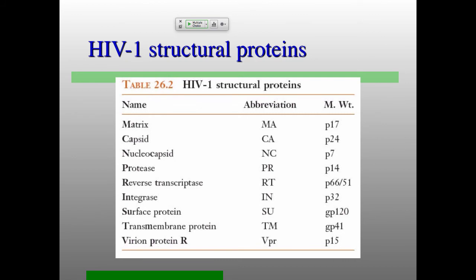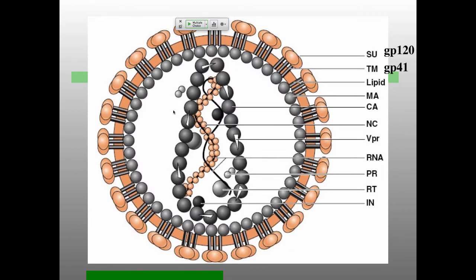HIV structural proteins are very similar to the classic retrovirus ones, with one exception: the virion protein R (VPR), which is part of the capsid. The HIV capsid has an interesting non-icosahedral structure, with this extra viral protein in it. Otherwise, surface, transmembrane, matrix, capsid, nucleocapsid, protease, reverse transcriptase, and integrase are all exactly the same.